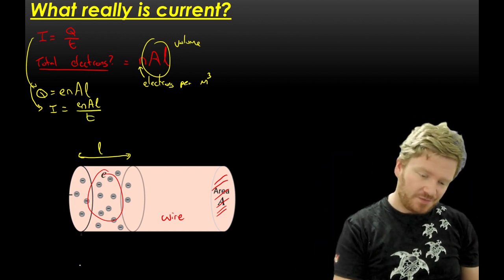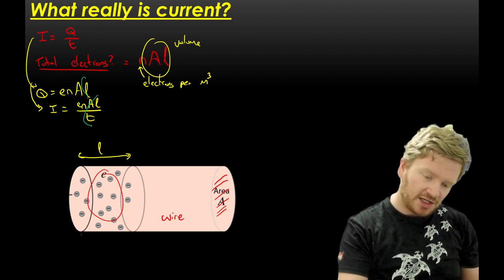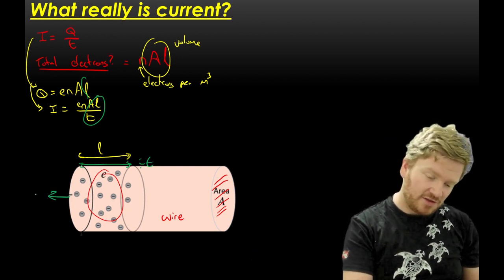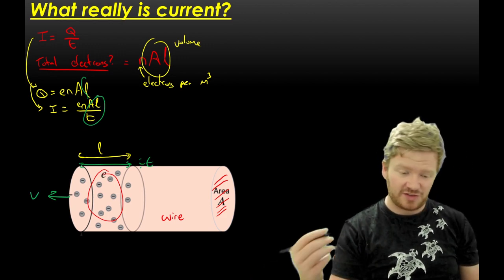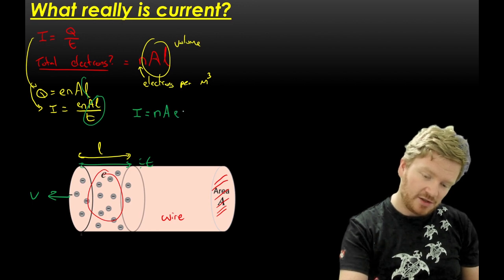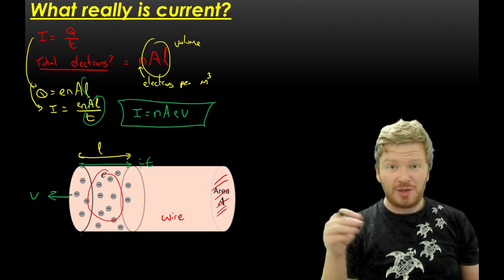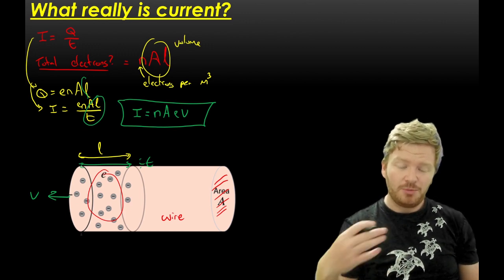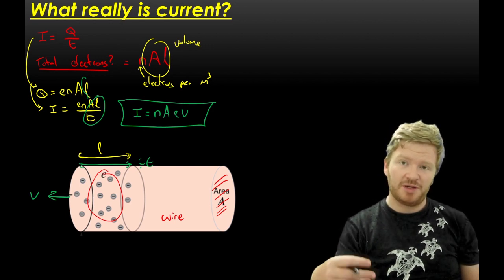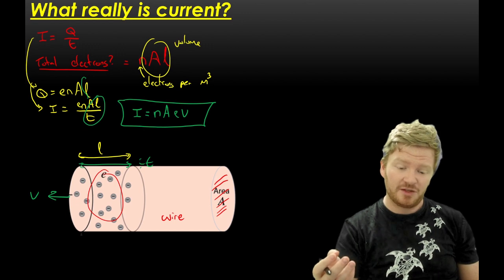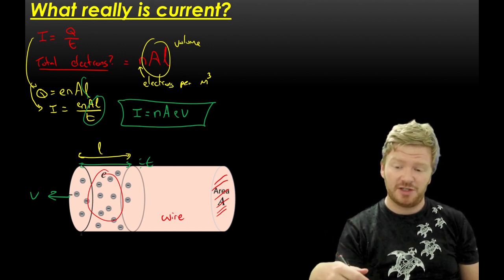But wait - if you look at this, I have L divided by T, which is a length divided by a time. That is the velocity that the electrons are travelling at. So I can rewrite this equation as current is equal to N·A·E·V. This is a standard equation you need to know and derive. Because N is always massive, V actually ends up being a tiny number - electrons travel really slowly, and we're going to prove that in a future lesson.